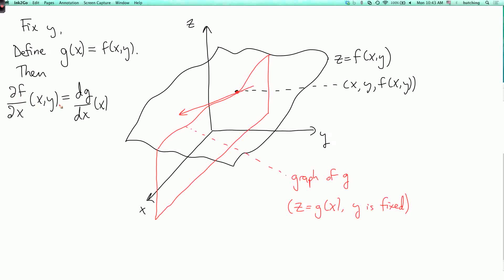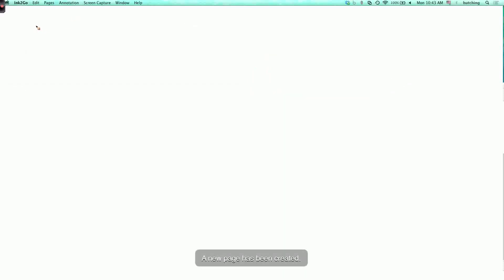Now, since the partial derivative is really the ordinary derivative of a function of one variable, that leads to the good news about partial derivatives, which is that they're very easy to compute. Namely, to compute partial f partial x, you regard y as a constant and differentiate with respect to x.